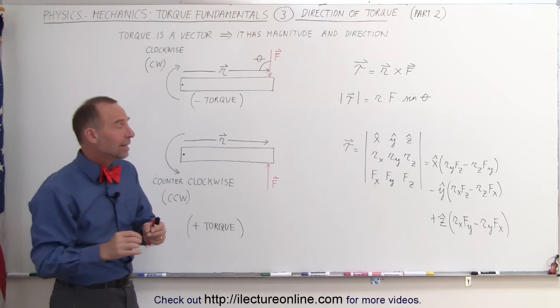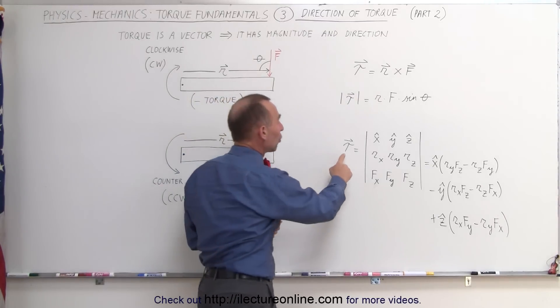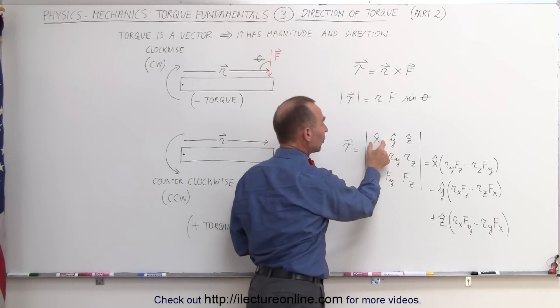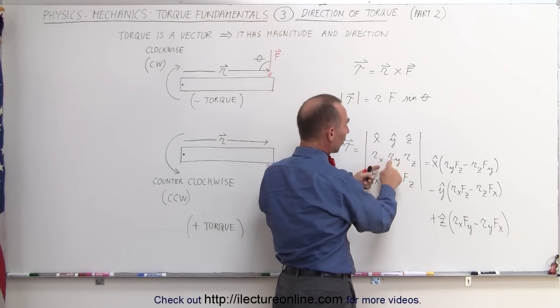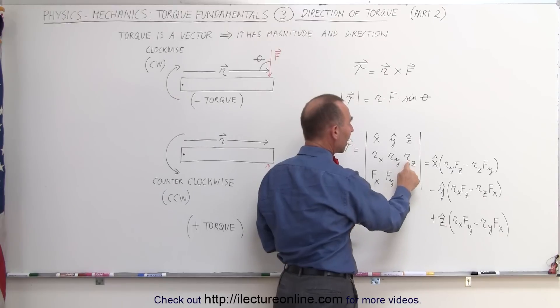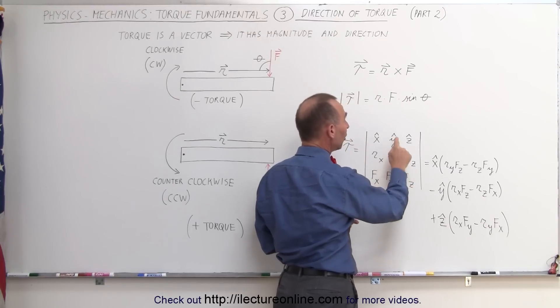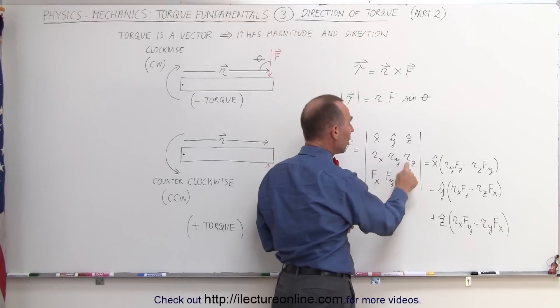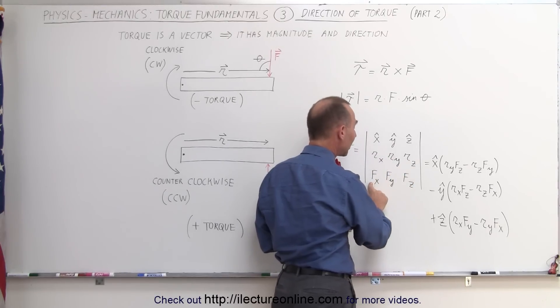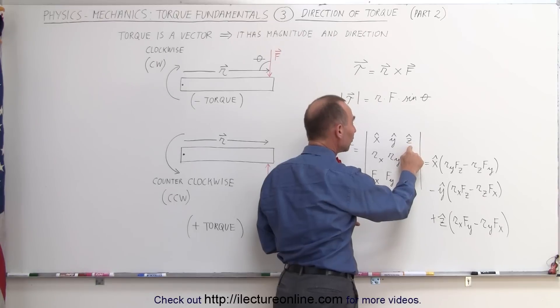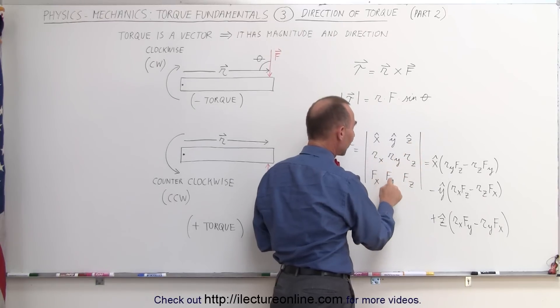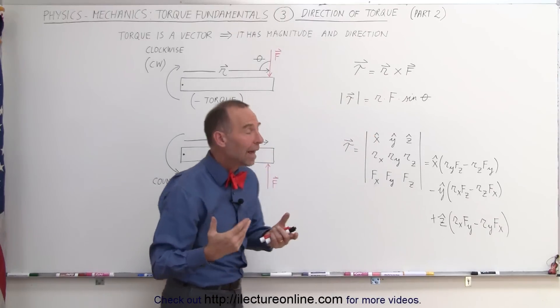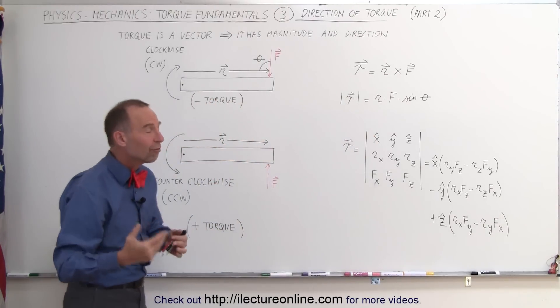If you want to find the result of that product, we can say that the torque then is equal to the matrix here. That would be the x component of the unit vector times what's remaining R sub y times F sub z minus R sub z times F sub y, minus the y unit vector times R sub x times F sub z minus R sub z times F sub x, plus the z unit vector times R sub x times F sub y minus R sub y times F sub x. And that's how you would calculate the actual torque in vector components.